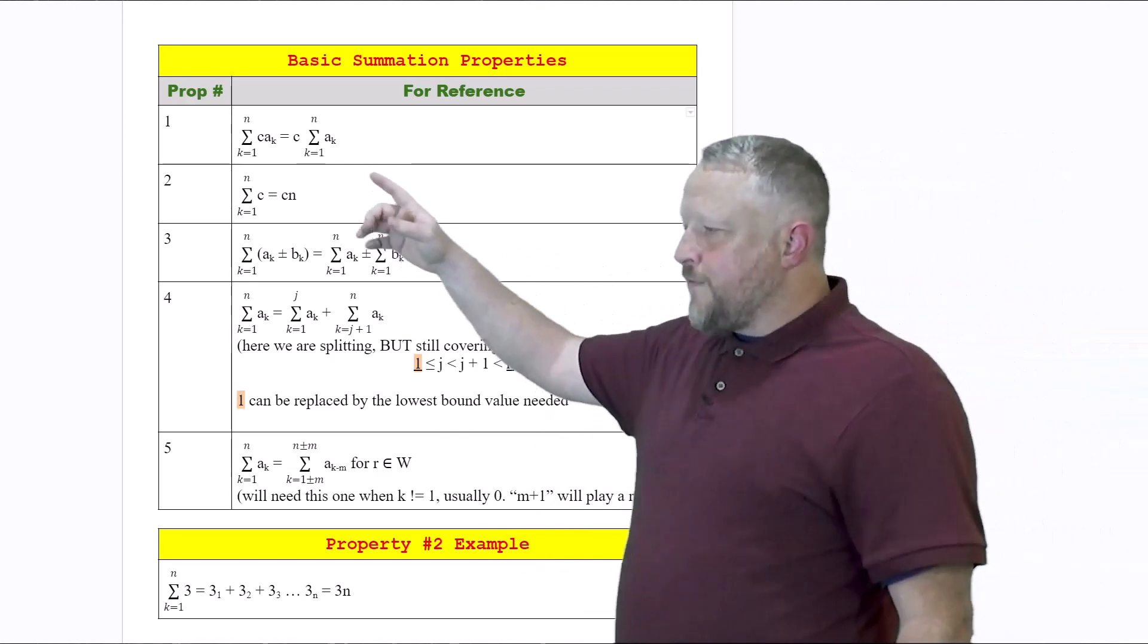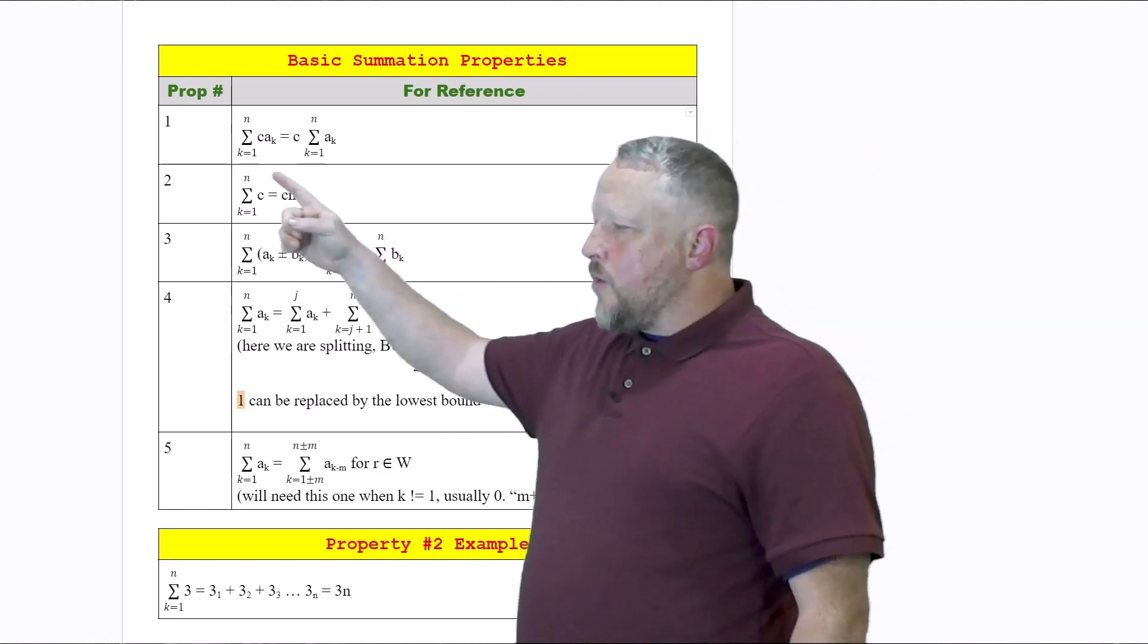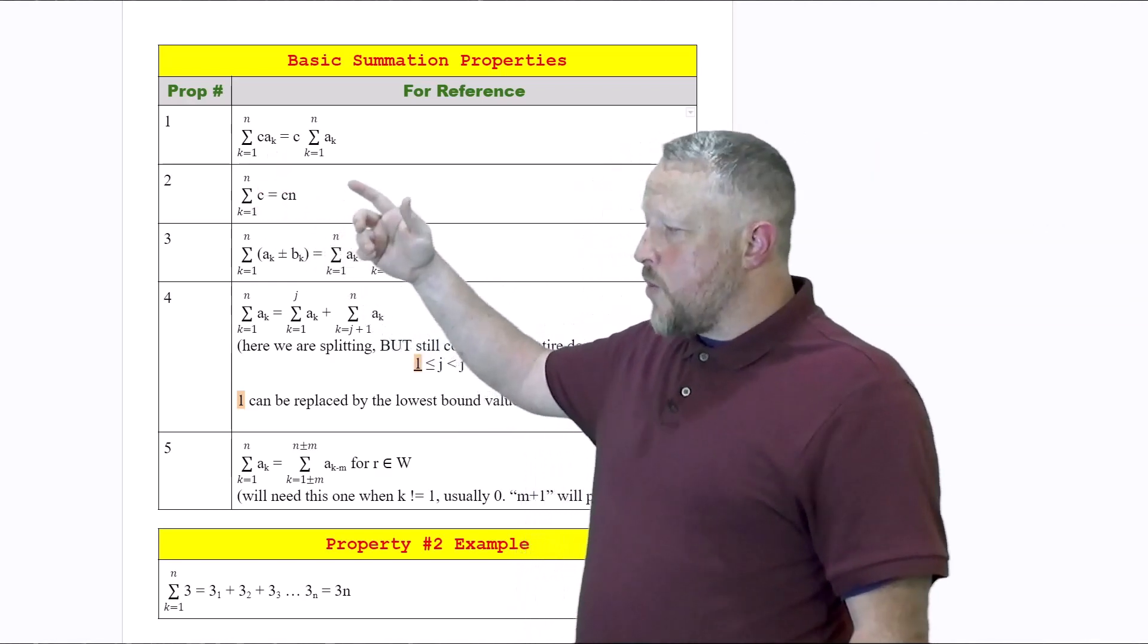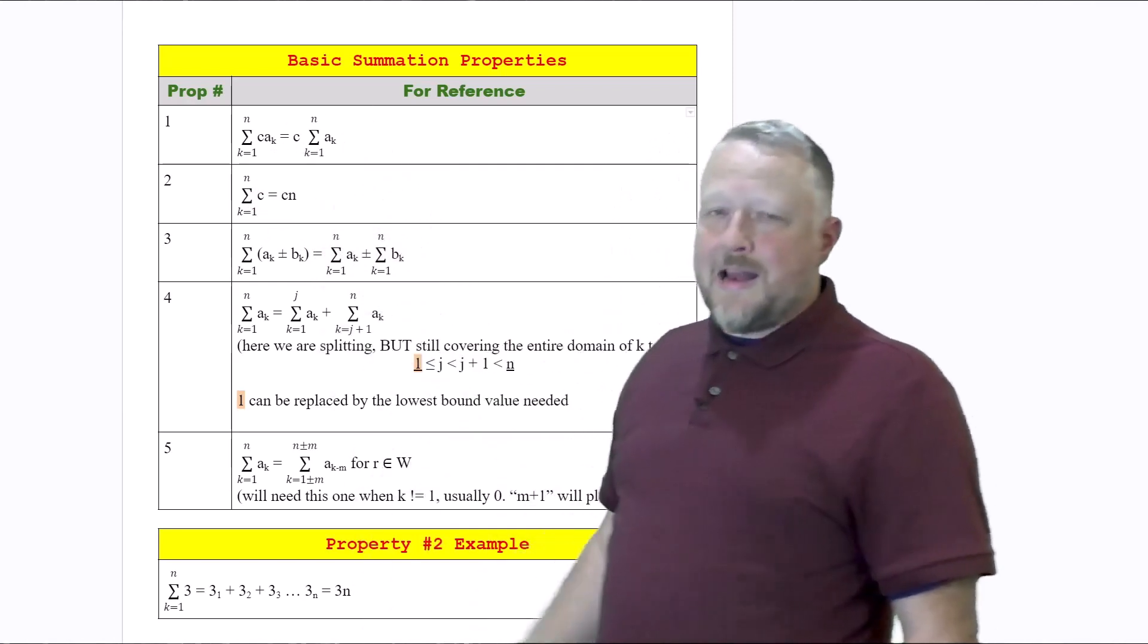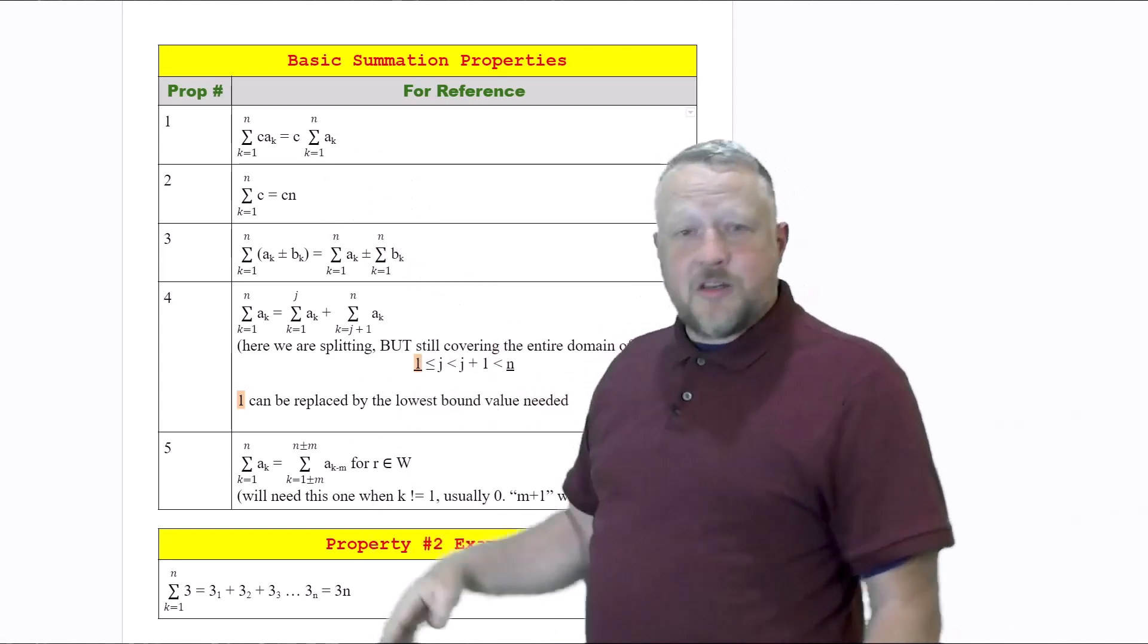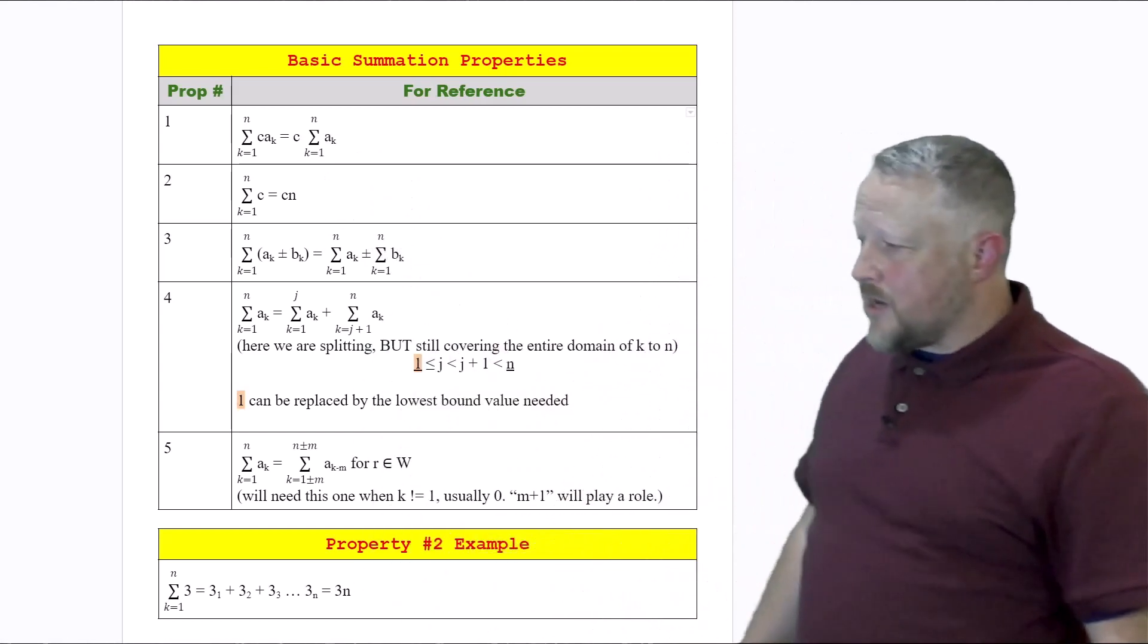In the first one that we have here, whenever we have a constant in front of some type of other part of the equation, we can pull any constants that we want out in front and still do our summation for that item that doesn't have a portion of the constant.